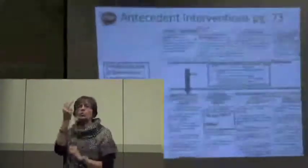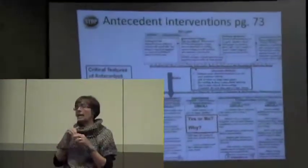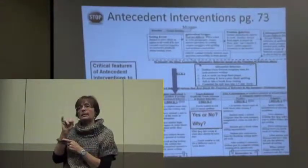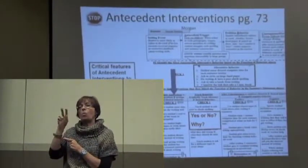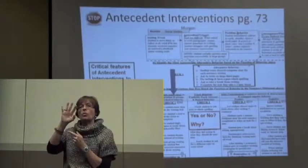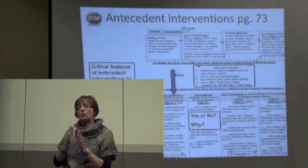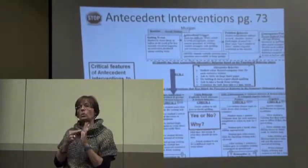Let's do some antecedent interventions for Morgan based on what we talked about. Remember: directly addresses the antecedent and matches the function. You can choose two from these five options — one of them has to do with the setting event. Spend about 30 to 45 seconds looking at what are some antecedent strategies using these rules.